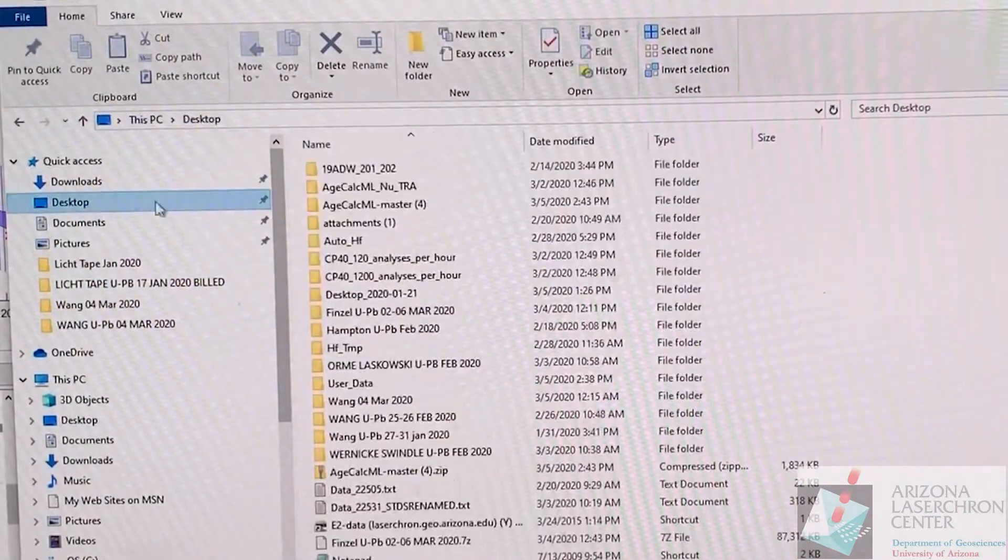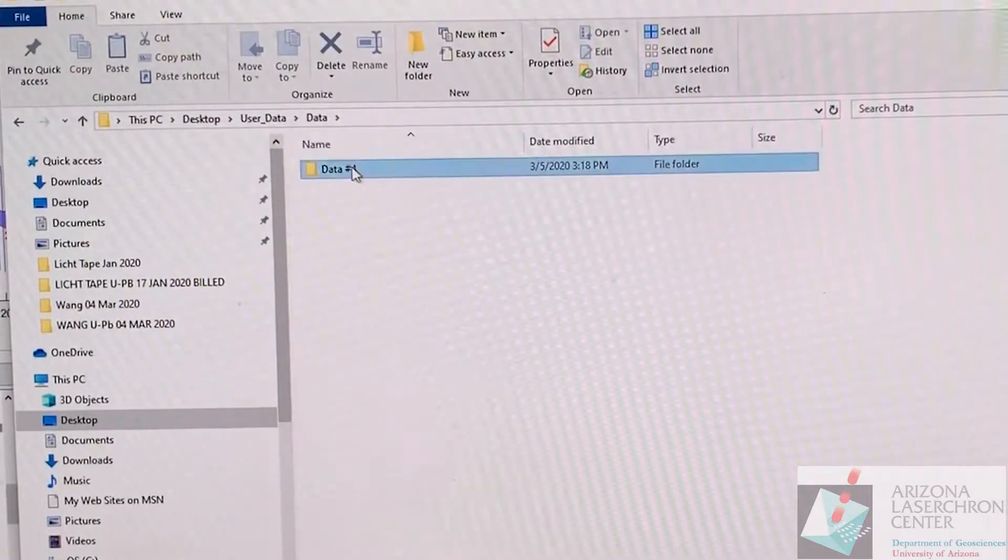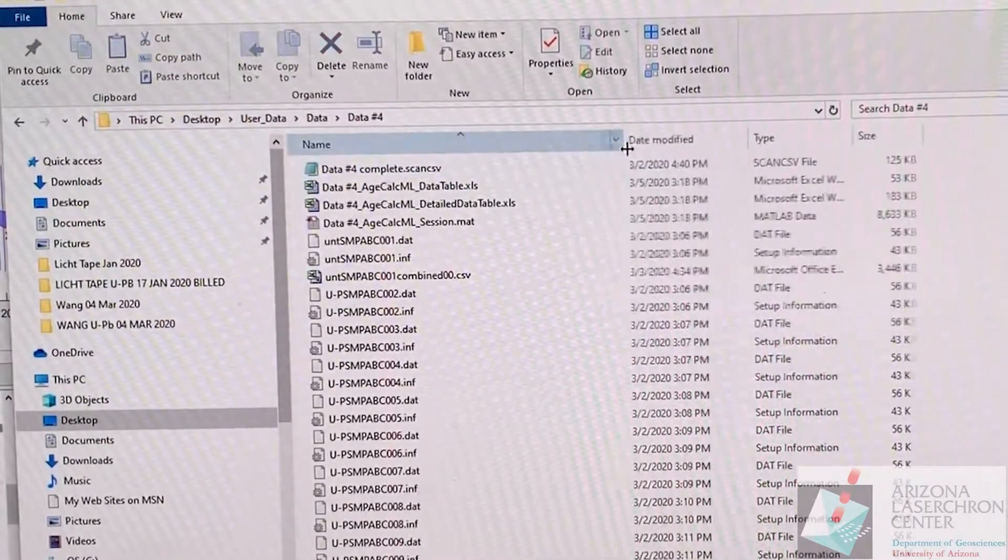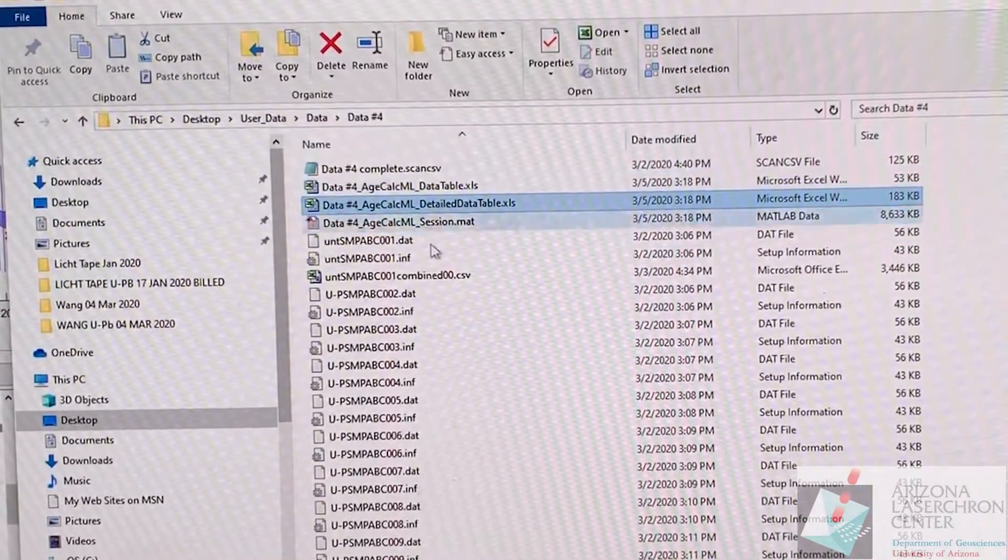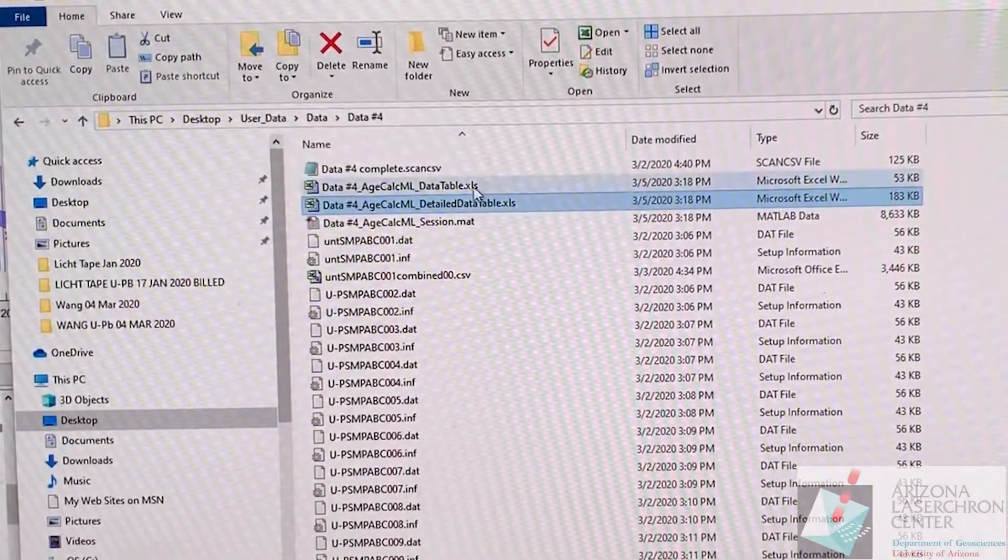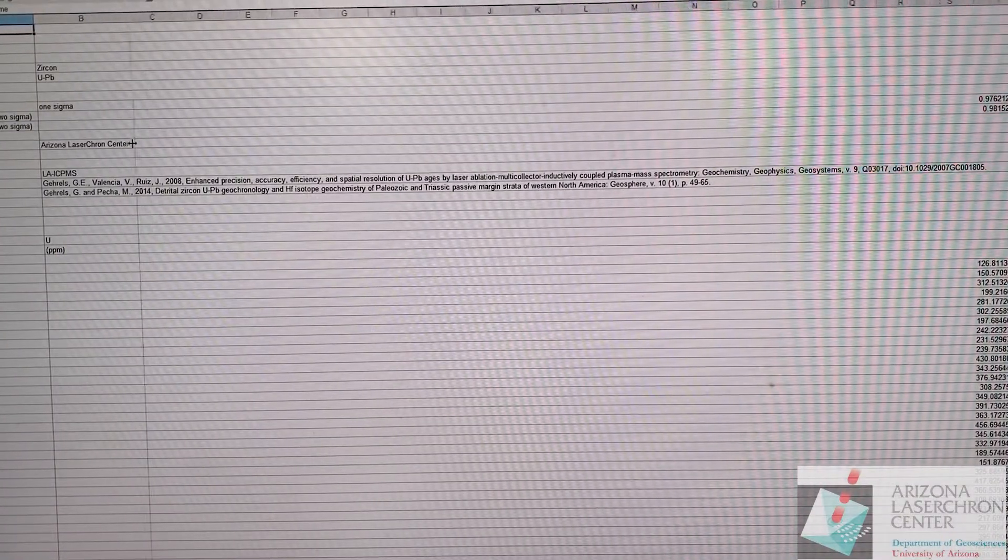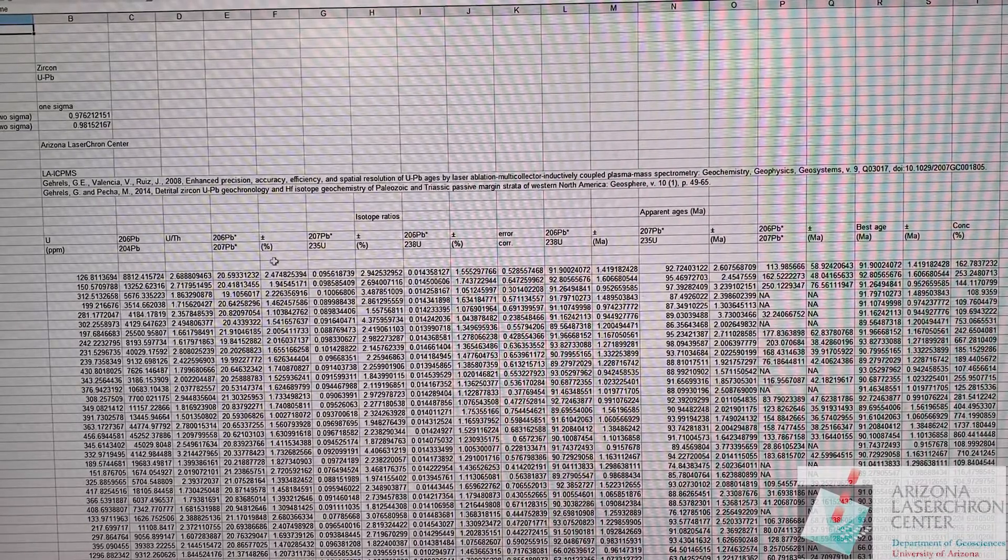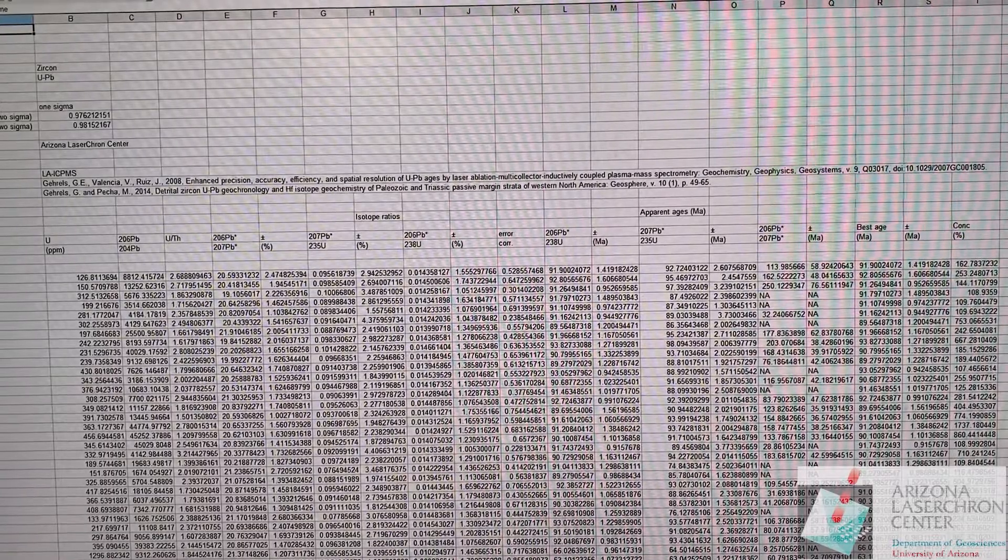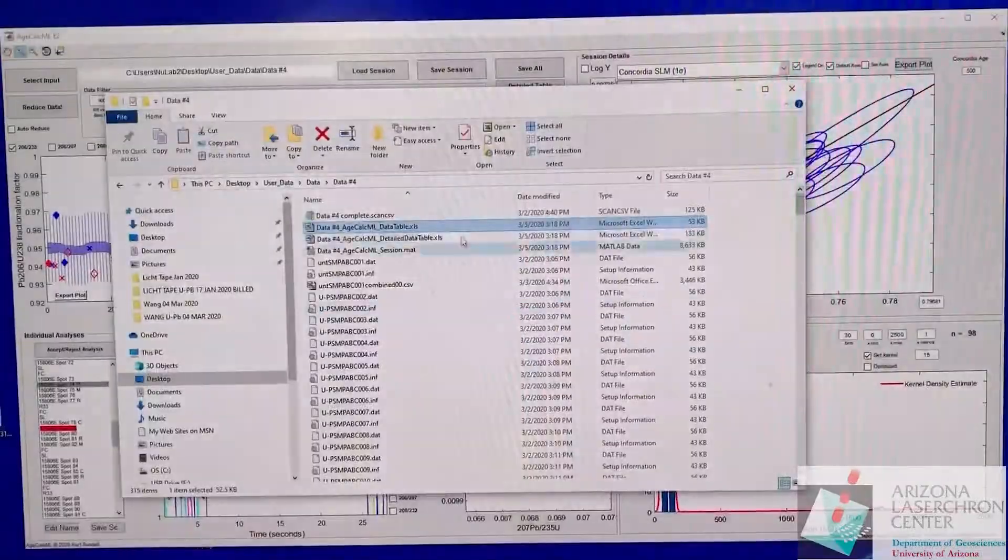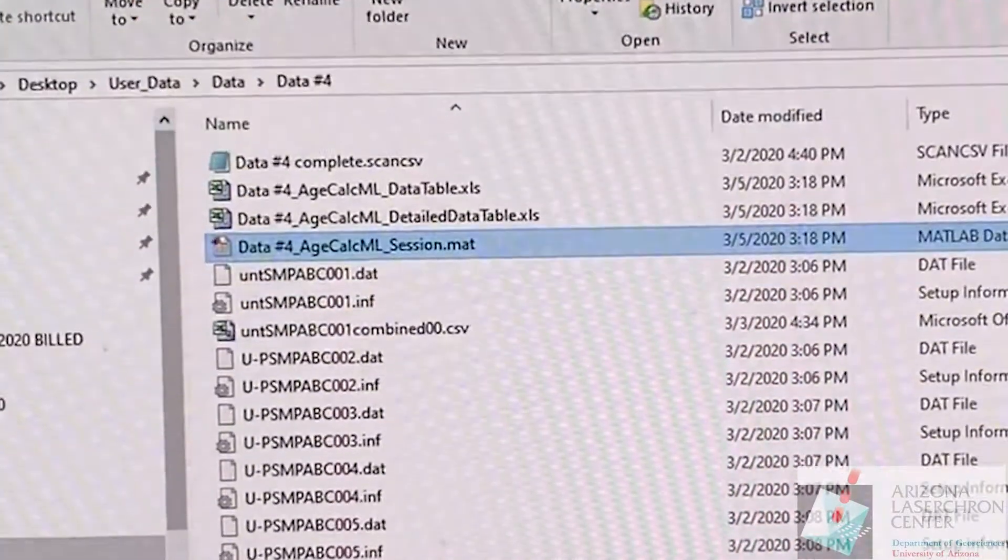If we go back to the folder that we're working in, go to data, now you see that we have three new files. We have a detailed data table, a regular data table. If you go into the data table here you have all of your isoplot tools that you can use but you can also use the AgeCalcML tools which again those are in a different video. And you also have your dot mat file. I'll explain what the dot mat file does now.